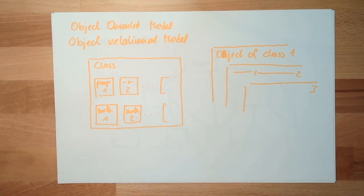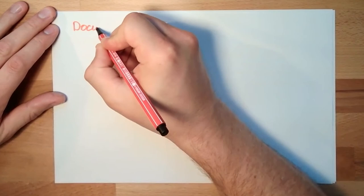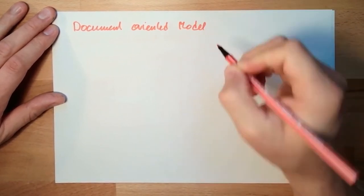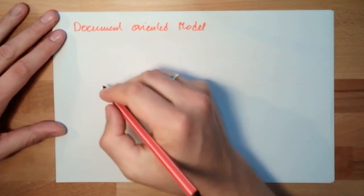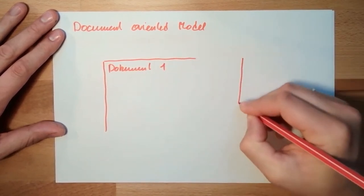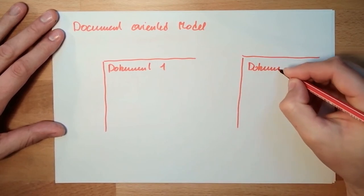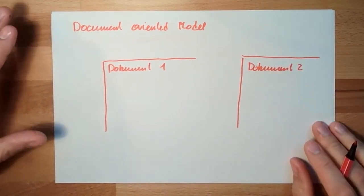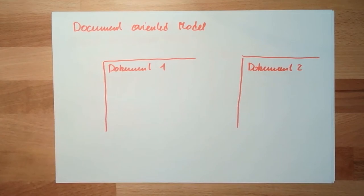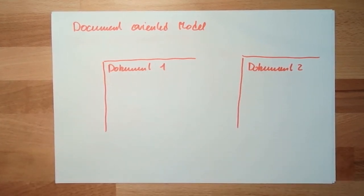Then there is such things like document-oriented databases, document-oriented model. What is this? The data is stored in so-called documents. There's maybe a document one, a document two, and so on. What is inside a document is not really specified. So this makes it very powerful. It doesn't really care if this is really a document or if this is a picture or whatever.